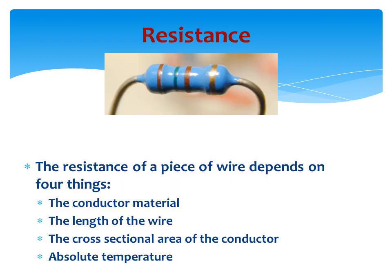The resistance of a piece of wire depends on four things: the type of conductor material — what the resistance is made of — the length of the wire or material, the cross-sectional area of the material or conductor, and the absolute temperature.